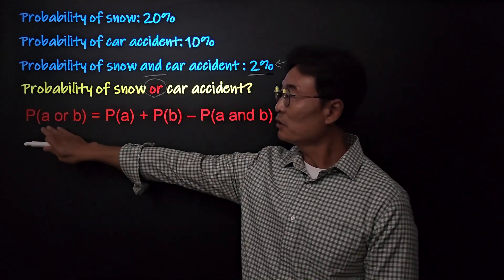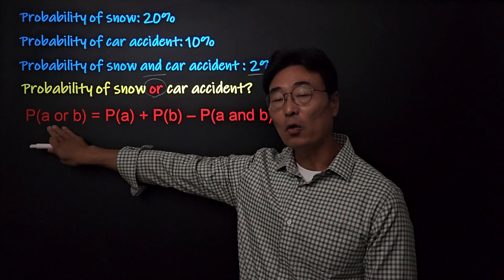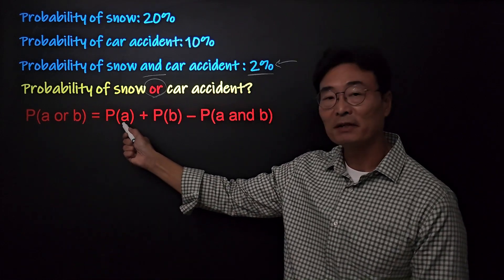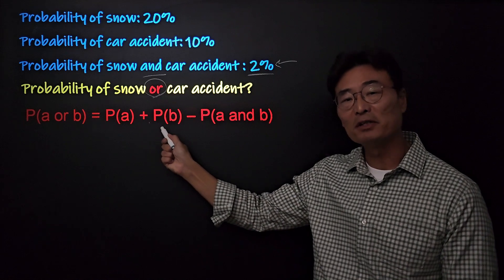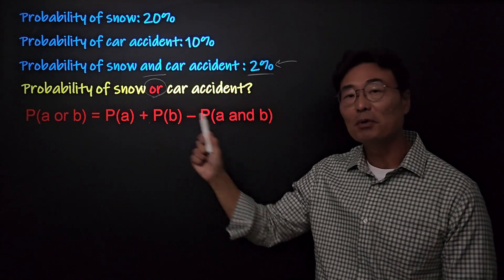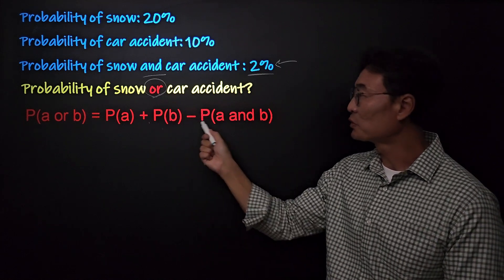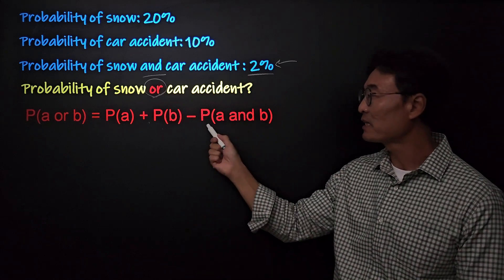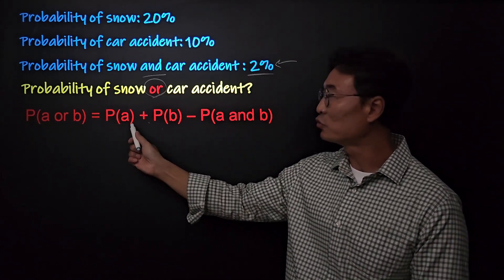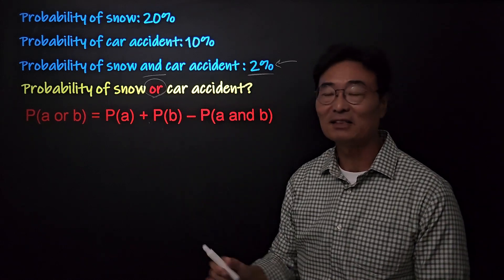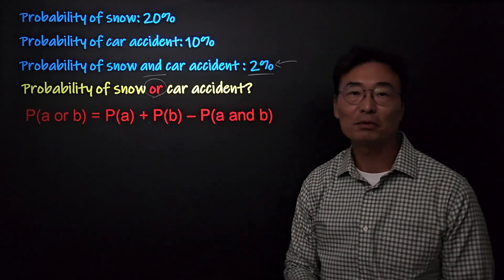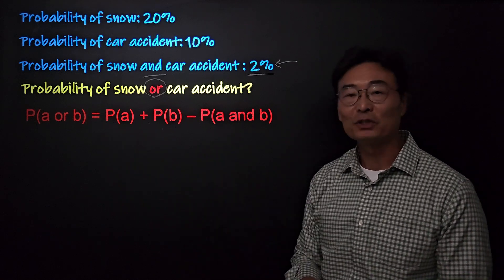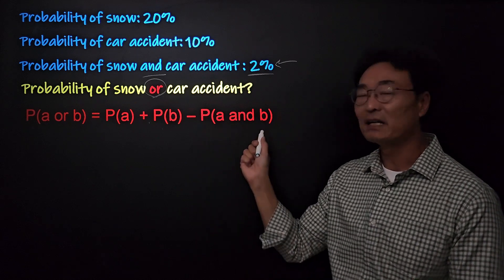To find the probability of A or B, we take the probability of A plus the probability of B, but we need to subtract the probability of A and B. This is because the probability of A and B is counted twice when we add probability of A plus probability of B, so we subtract it.